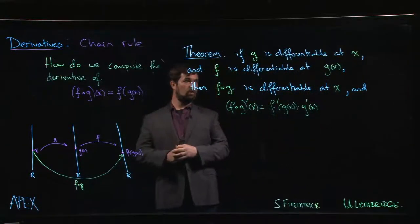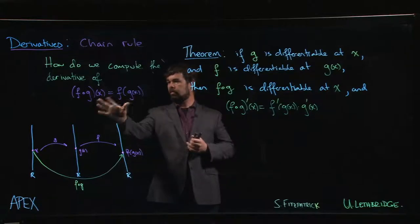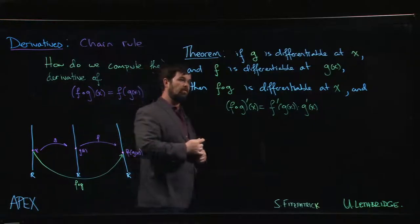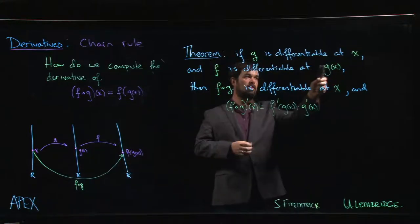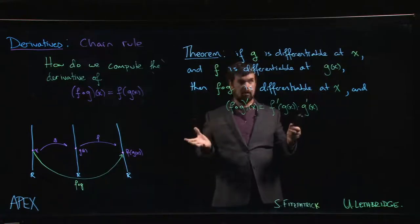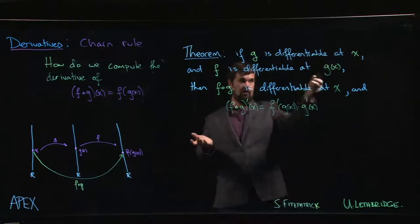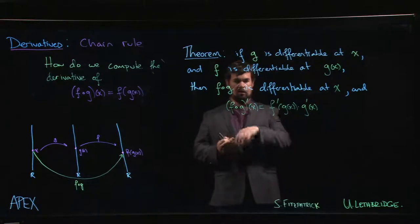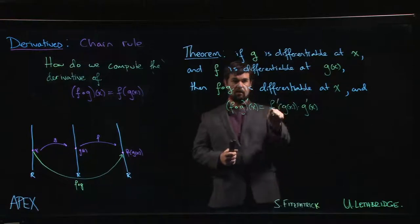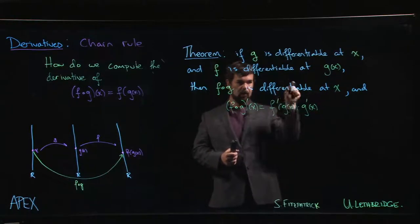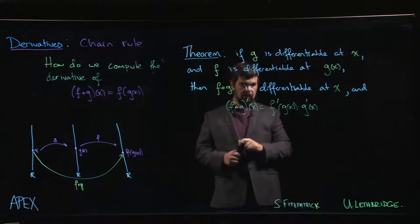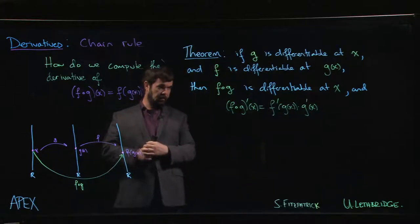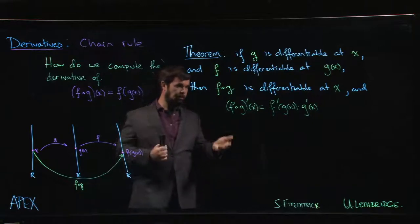Here's the statement of the chain rule. We want to consider derivatives of compositions — we want to take the derivative of f composed with g. The chain rule says: as long as the inner function is differentiable at x and the outer function is differentiable at the output of the inner function, so f is differentiable at g(x), then the composition will be differentiable at x. The derivative of the composition is given by the derivative of the outside evaluated at the inside, multiplied by the derivative of the inside. So it's f prime times g prime.